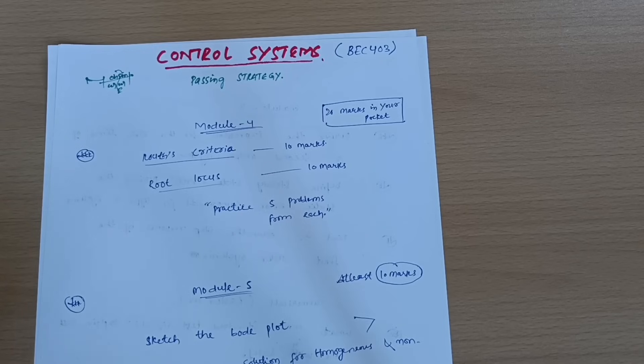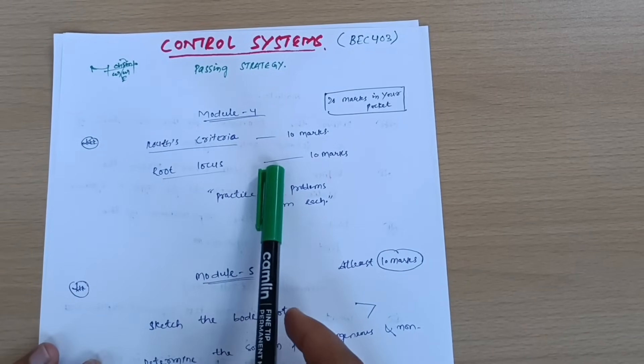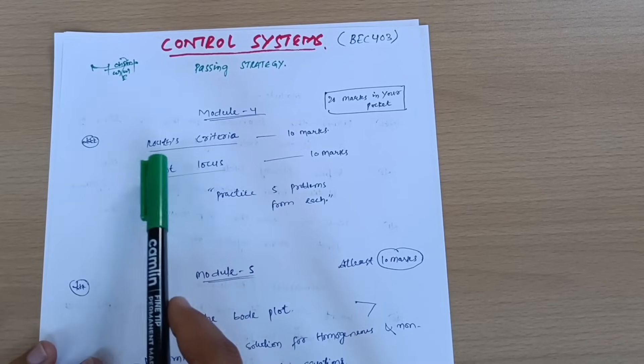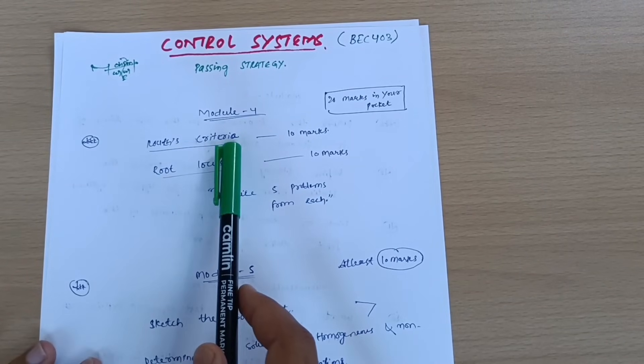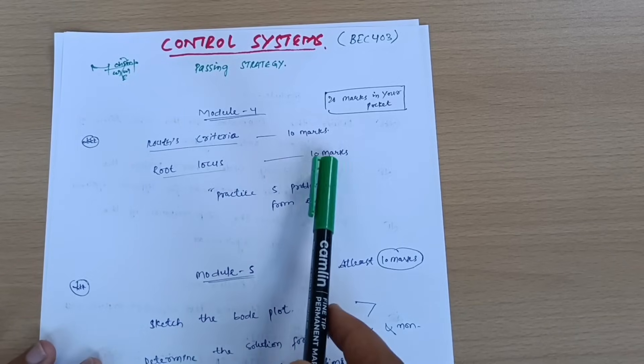First of all, let me discuss how you can pass the Control Systems subject. If you just go through Module 4, there are two topics which you should cover compulsorily: Routes criteria, very simple one, already video is available on that, and Root locus, 10 marks, sometimes 14 marks problem.